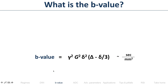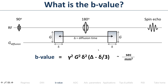The B value formula: B is proportional to the gyromagnetic ratio squared (constant for hydrogen at 42.6 MHz/T), the gradient amplitude squared, the gradient duration squared (with an arithmetic correction), and the diffusion time. So to make your B value higher, you can increase gradient amplitude, increase lobe duration, or increase gradient separation.